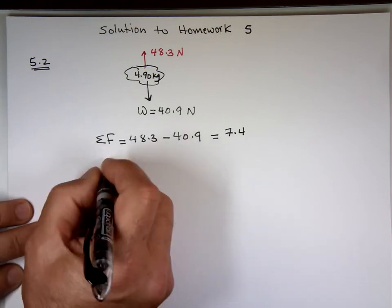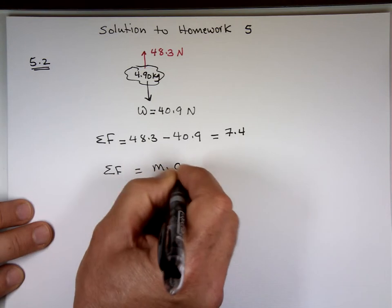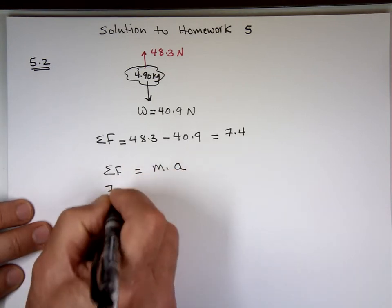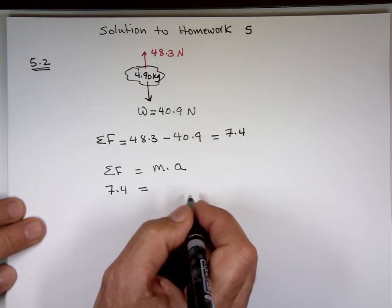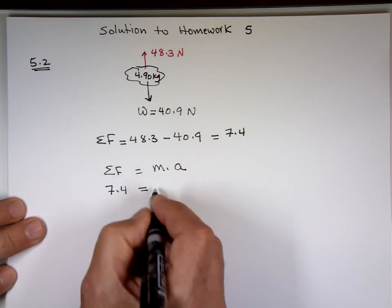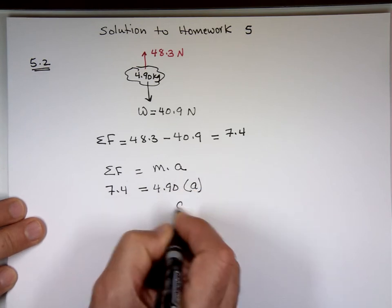So now, we know the net force equals mass times acceleration. The 7.4 equals the mass. What's the mass? The mass is 4.90 times the acceleration A. Can we get the acceleration?